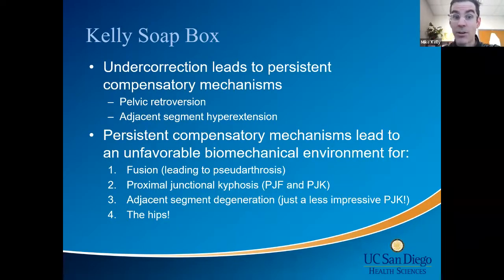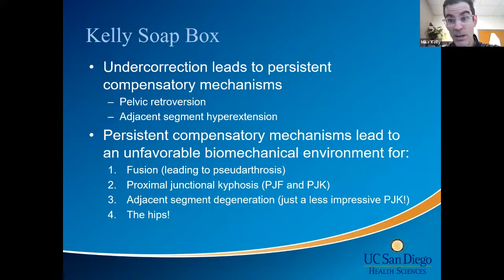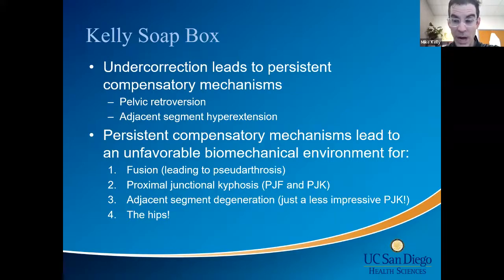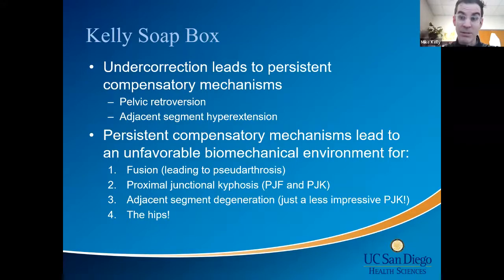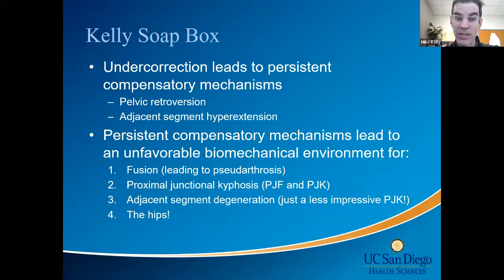On the Kelly soapbox: undercorrection leads to persistent compensatory mechanisms — pelvic retroversion in deformity — but also adjacent segment hyperextension. The classic example is an isthmic spondylo with lumbosacral kyphosis reduced to grade 0.25 with no lordosis. Look at the adjacent segment disc in those X-rays — it's like Pac-Man. You can pat yourself on the back for fixing the translation, but if you don't fix the regional sagittal alignment it's not going to work.